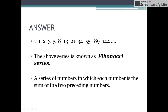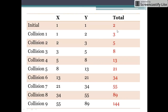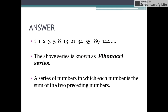Also, we see that the number of stars formed in any collision is equal to the sum of the stars formed in the preceding two collisions. For example, in collision number 3 the total stars formed are 8. The stars formed in the preceding two collisions, that is collision number 1 and 2, are 3 and 5. The sum gives the number of stars in collision number 3: 3 plus 5 gives 8, 5 plus 8 gives 13, 13 plus 21 gives 34, 21 plus 34 gives 55, and so on. This type of series in which each number is the sum of the two preceding numbers is known as the Fibonacci series. Stay tuned and keep watching.